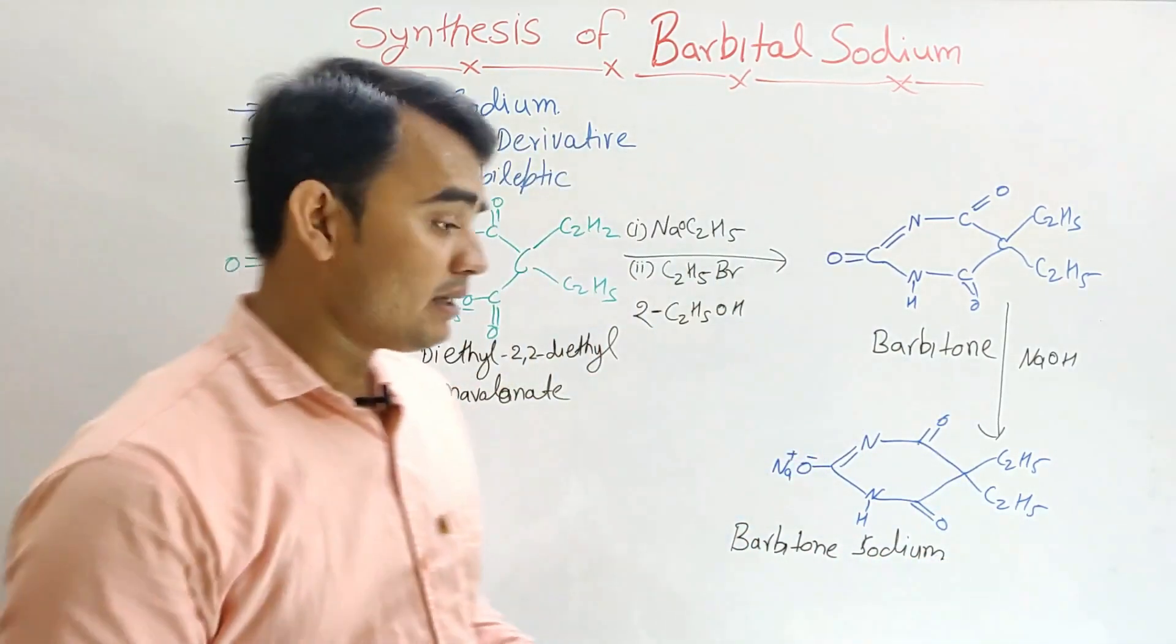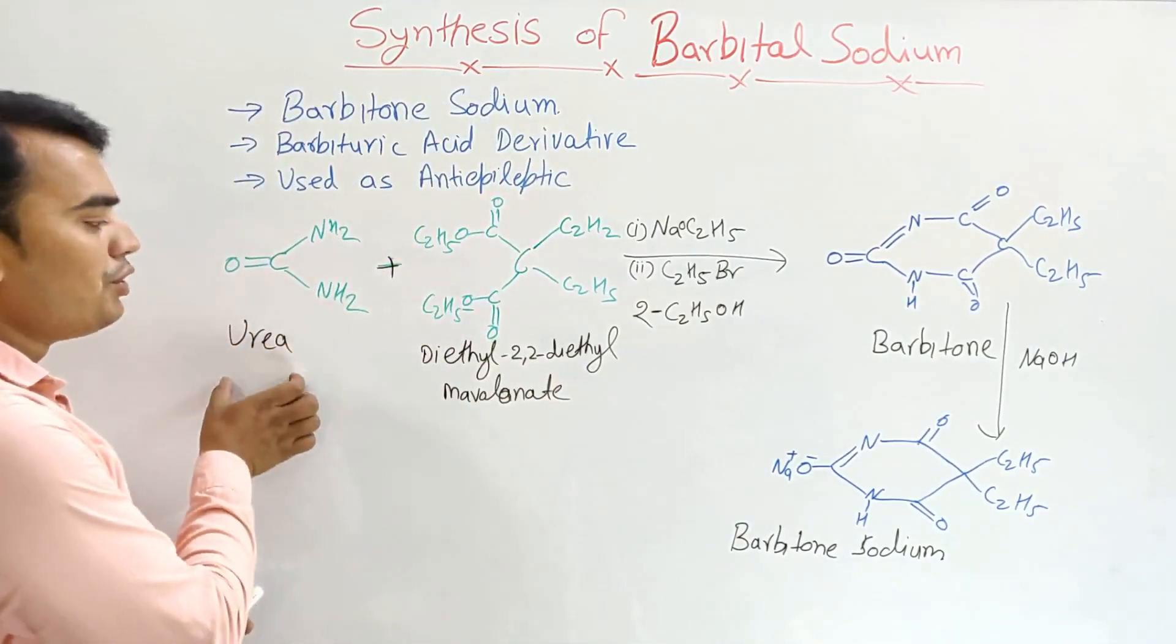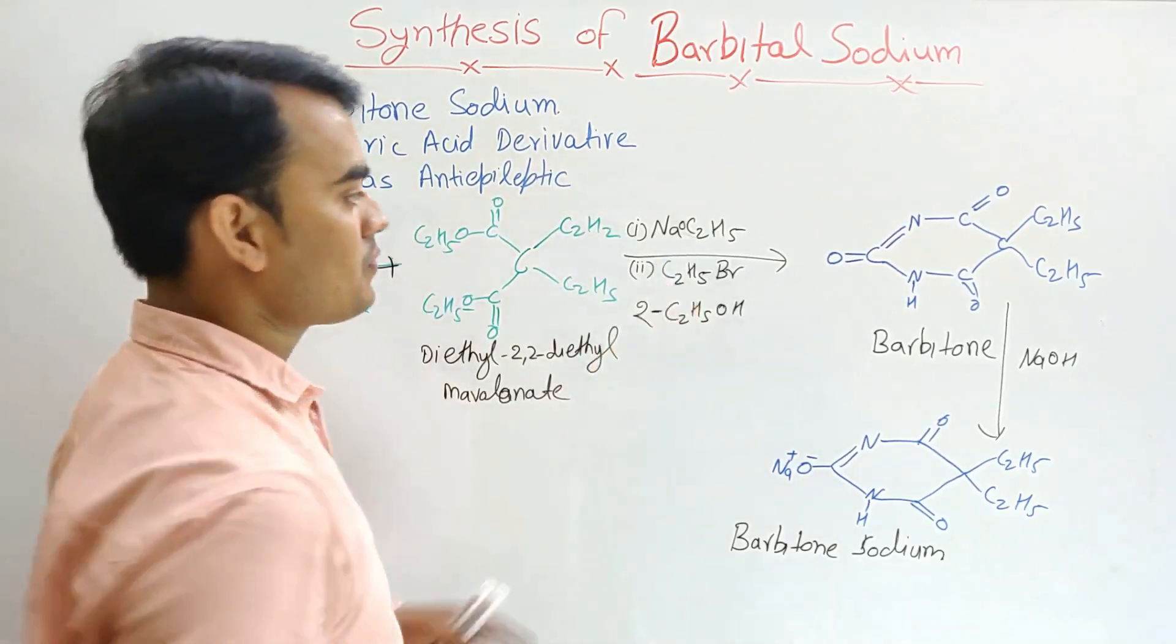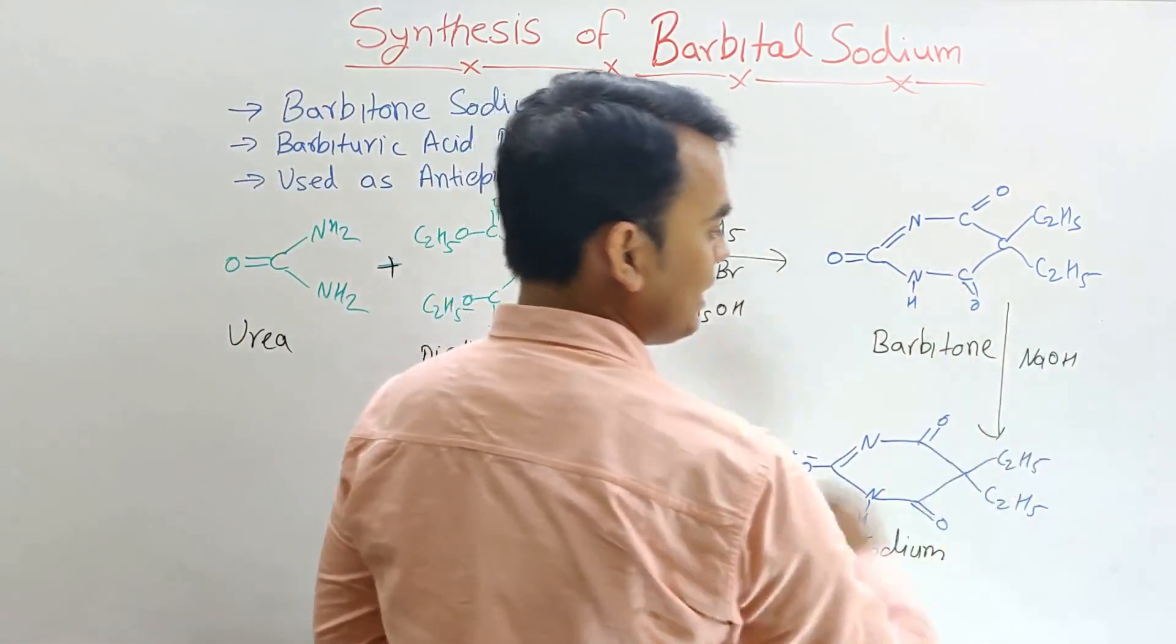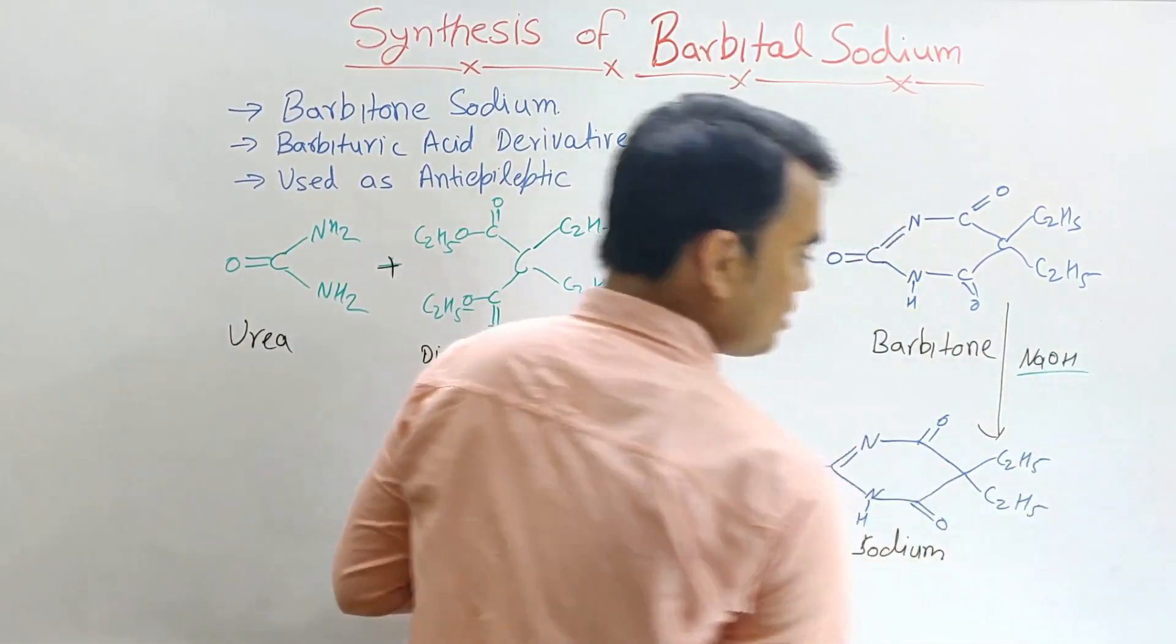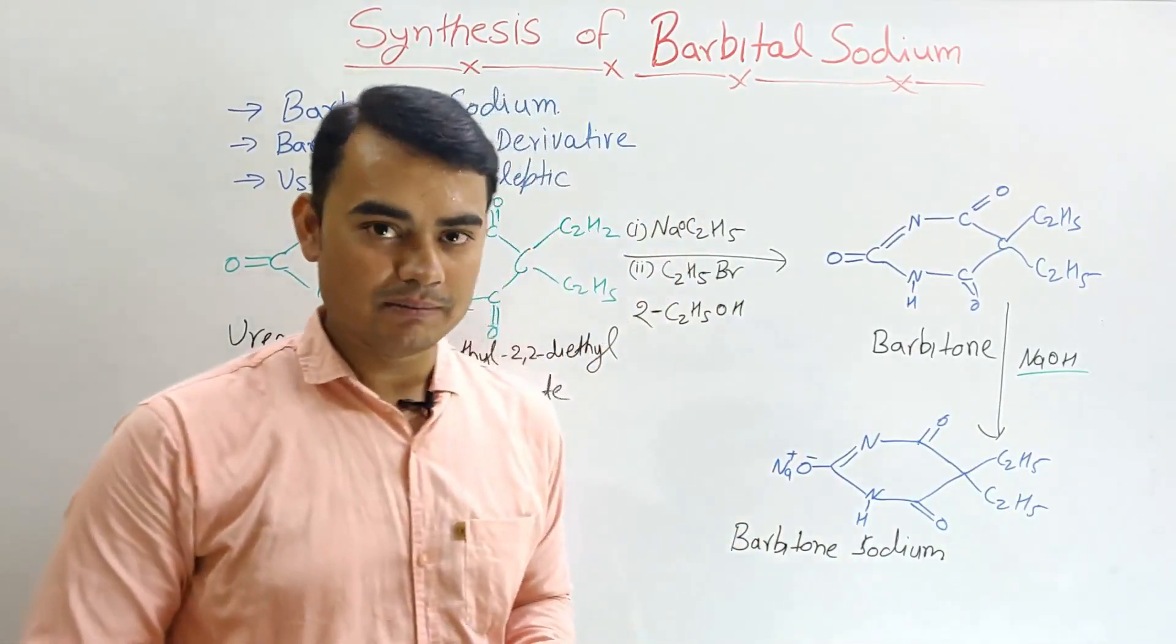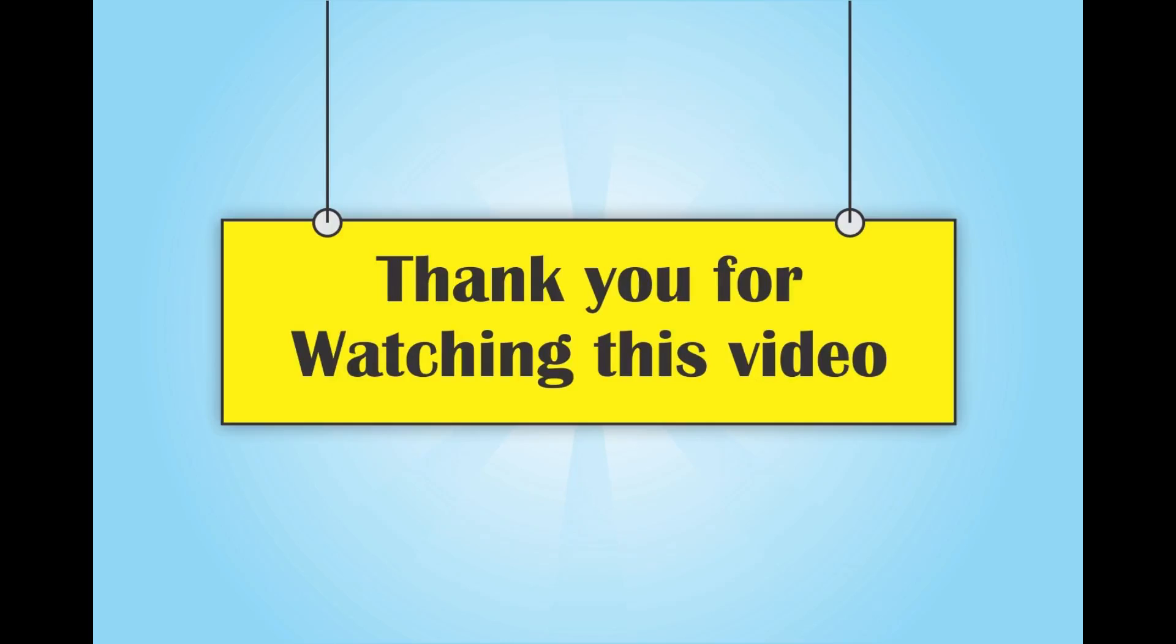So antiepileptic drug, barbitone sodium has a very easy synthetic steps reaction. Here urea and 2,2-diethyl malonate reacted in the presence of sodium ethoxide and ethyl bromide, then it formed the barbitone. Now this barbitone when reacted with sodium hydroxide, then it formed the barbitone sodium. Thank you.